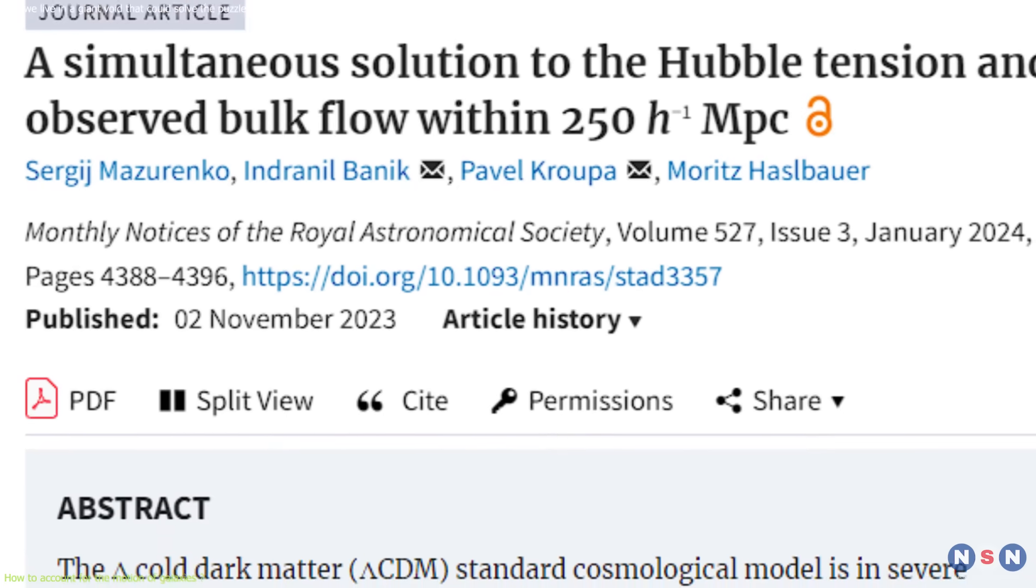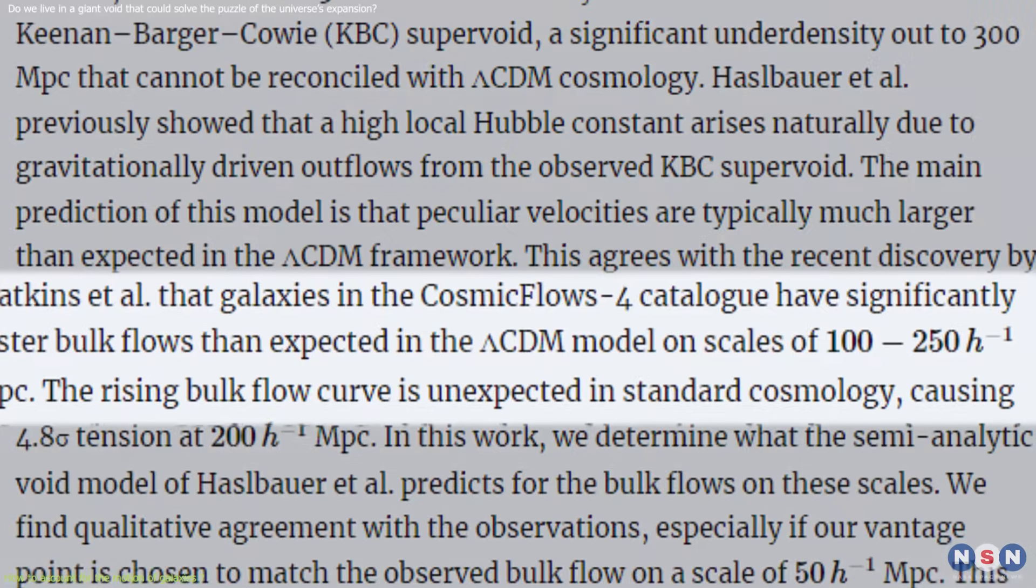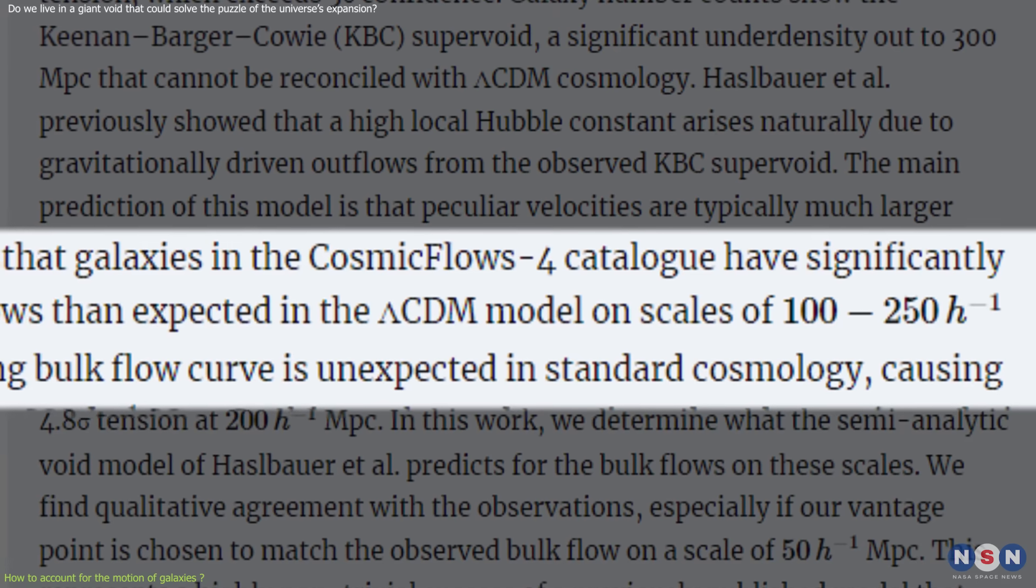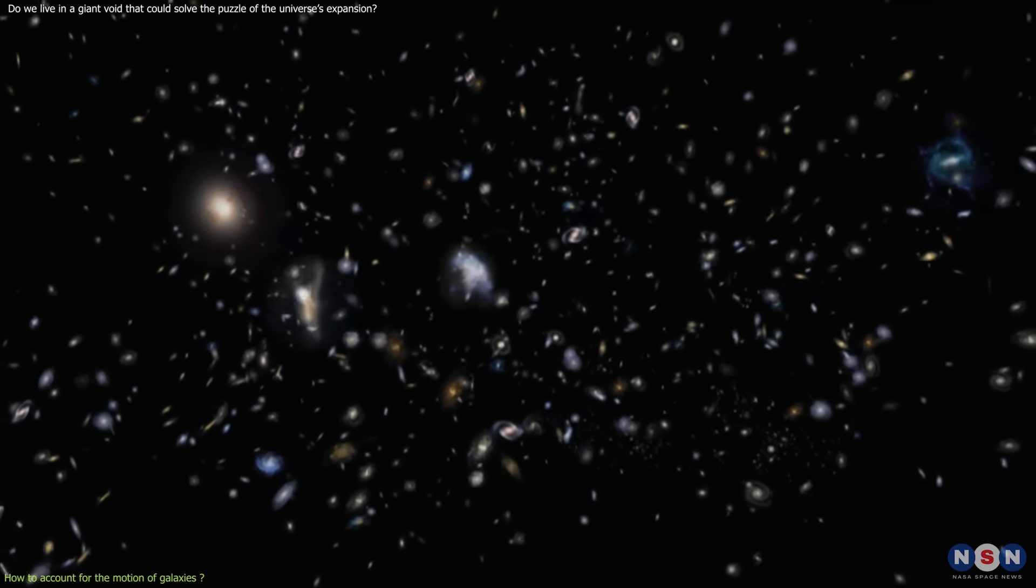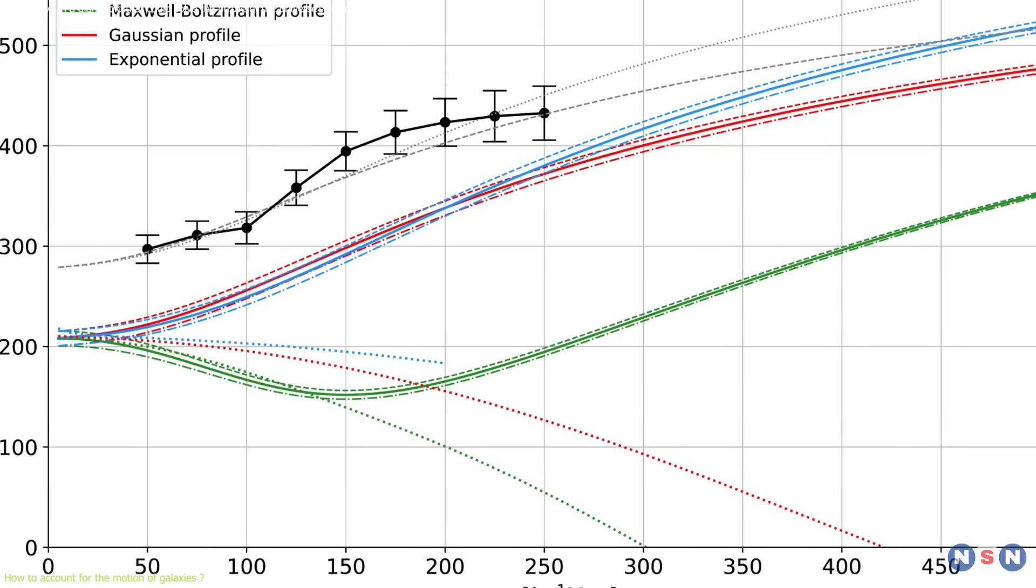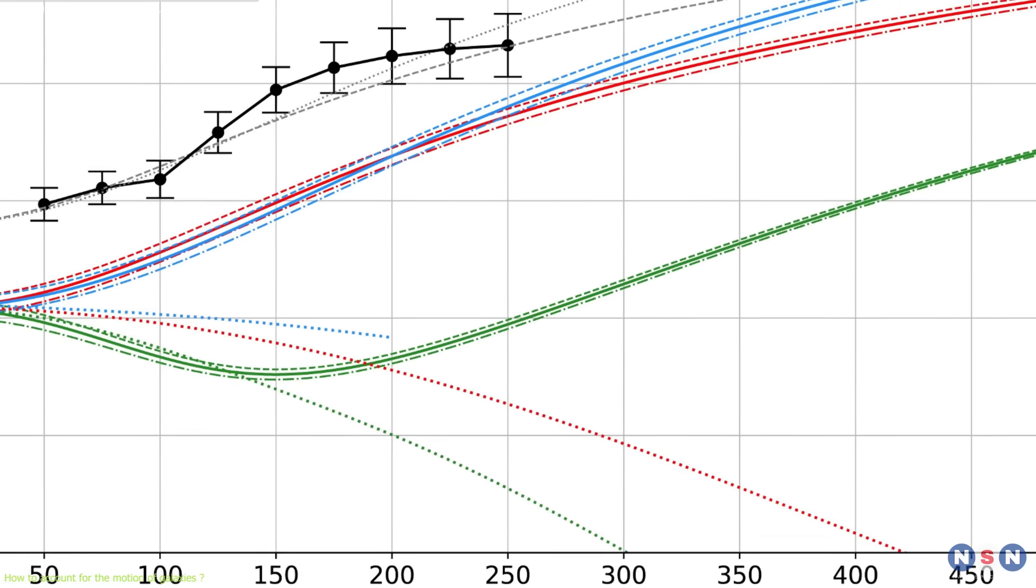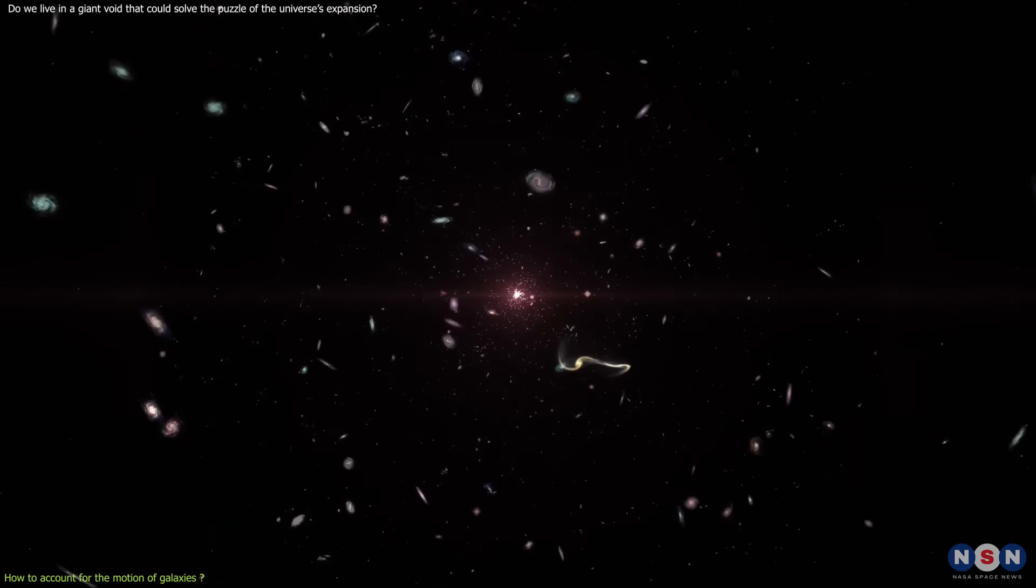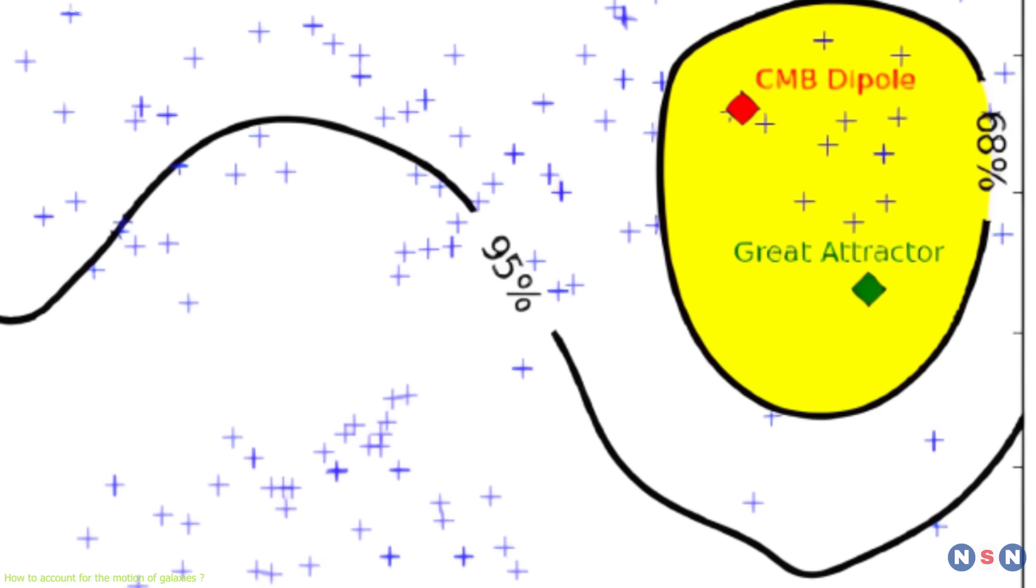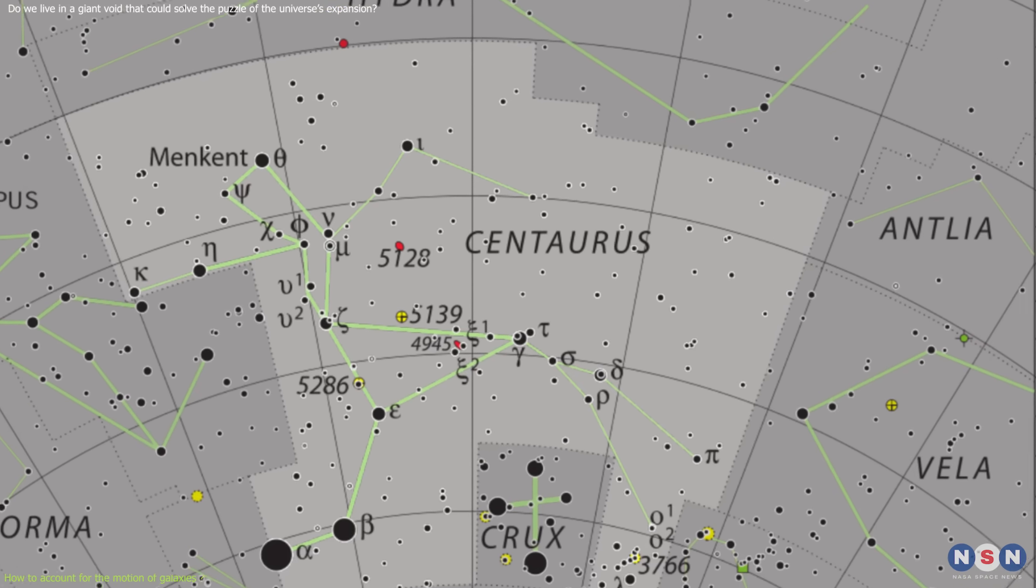But when the authors of the paper did this, they found something surprising and intriguing. There is a significant and coherent motion of galaxies within 250h to the power of negative 1 megaparsec from us, which is the largest coherent motion ever detected in the local universe. This motion is called the bulk flow, and it means that the galaxies in this region are moving in the same direction and with the same speed, relative to the average motion of the universe. The bulk flow is not random or isotropic, but it is aligned with a specific direction in the sky, which points towards the constellation of Centaurus.